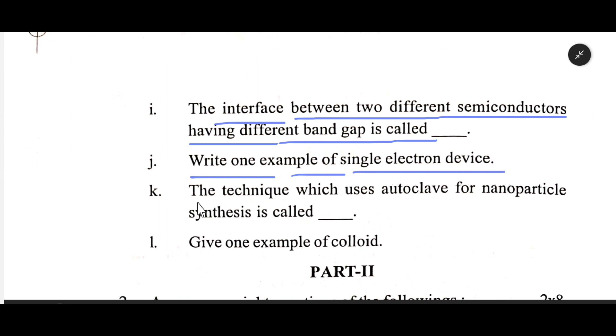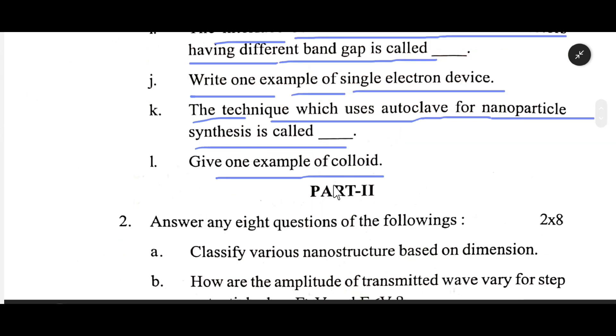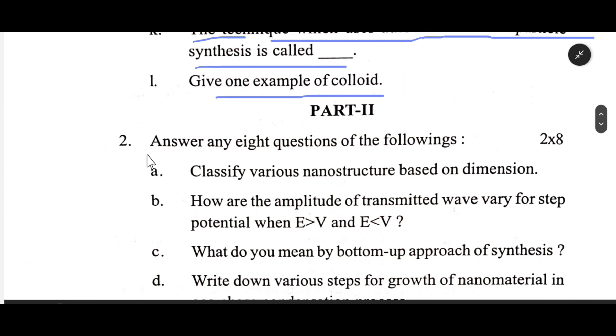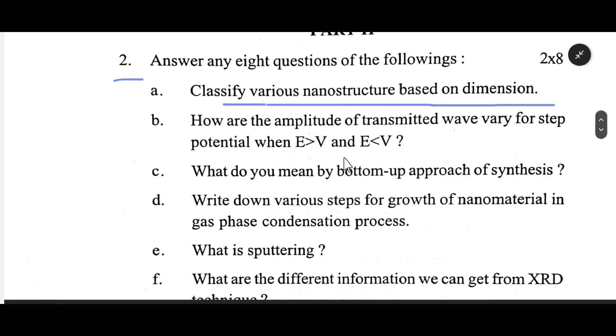The interface between two different semiconductors having different band gap is called dash. Write one example of single electron device. The technique which uses autoclave for nanoparticle synthesis is called dash. Give one example of colloid. Number two: classify various nanostructure based on dimension. How are the amplitude of transmitted wave vary for step potential when E greater than V and E less than V?